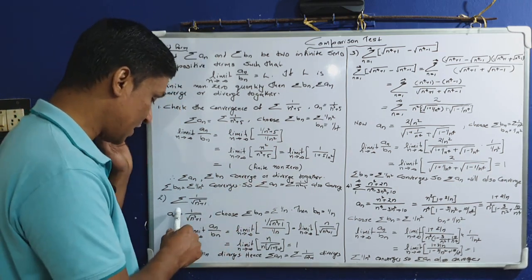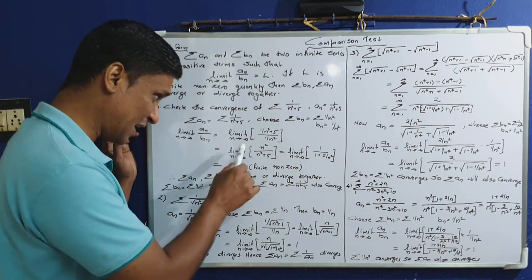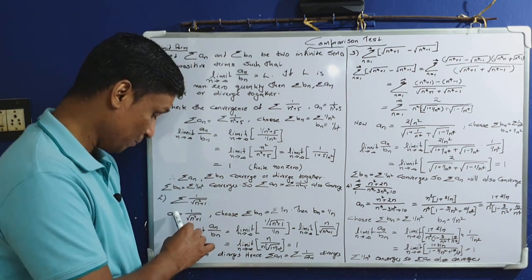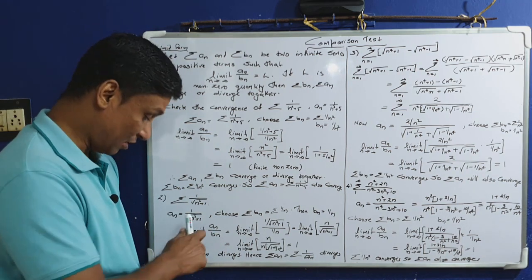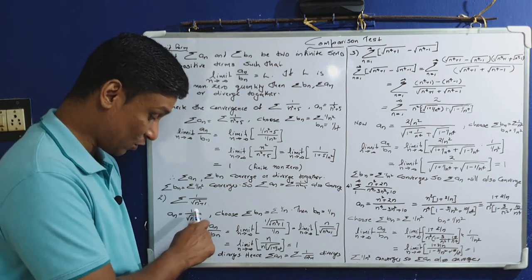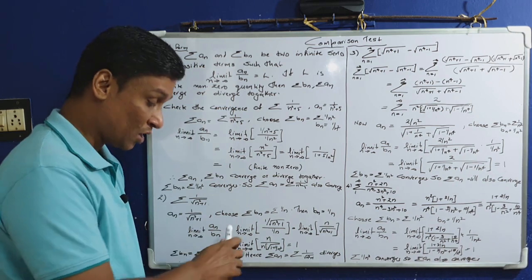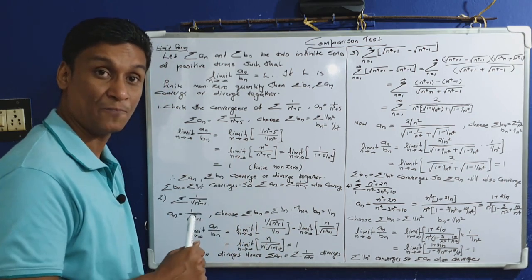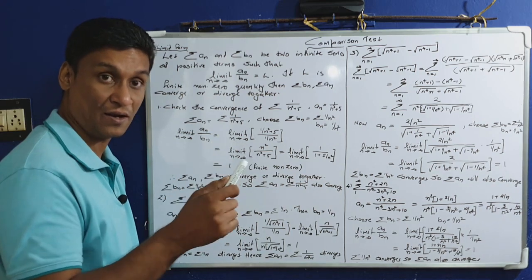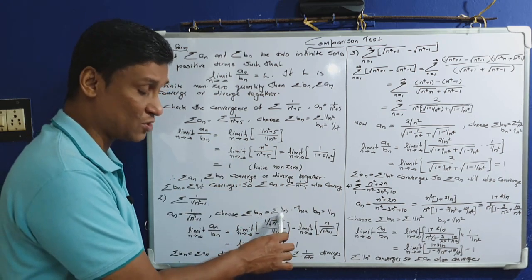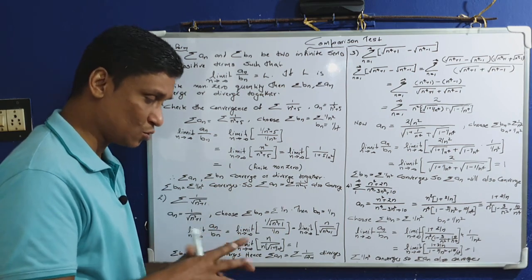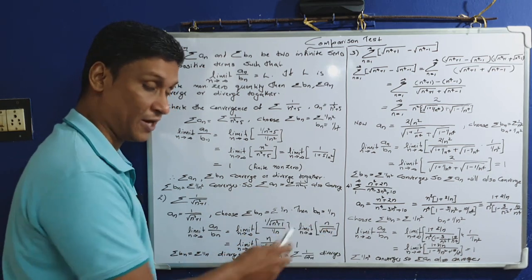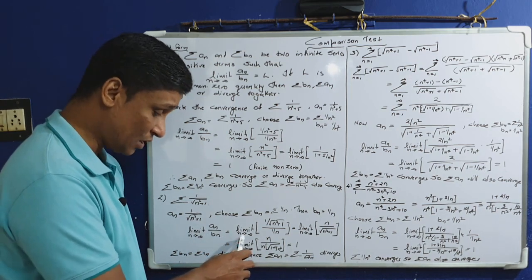Now the second problem: sigma from n equal to 1 to infinity of 1 by root of (n²+1). So a_n = 1/√(n²+1). Since root of n² is n itself, 1/√(n²) is 1/n. I am choosing sigma b_n equal to sigma 1/n, so b_n = 1/n. Now compute limit n tends to infinity of a_n by b_n.